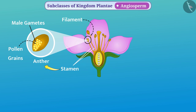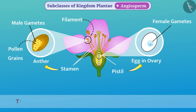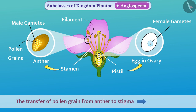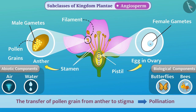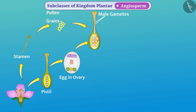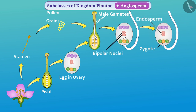In the center of the flower there is a jug-like part called the pistil, which is the female sex organ of the plant. It consists of female gametes called eggs in the ovary. The transfer of pollen grain from anther to stigma is called pollination. It takes place with the help of abiotic components such as air and water, or biological components such as insects and animals like butterflies and bees. Two male gametes from the pollen grain are released into the ovary by the pollen tube. One male gamete fuses with an egg cell to form a zygote, and the second male gamete fuses with bipolar nuclei to form an endosperm. The zygote then develops into the seed and the ovary develops into the fruit.